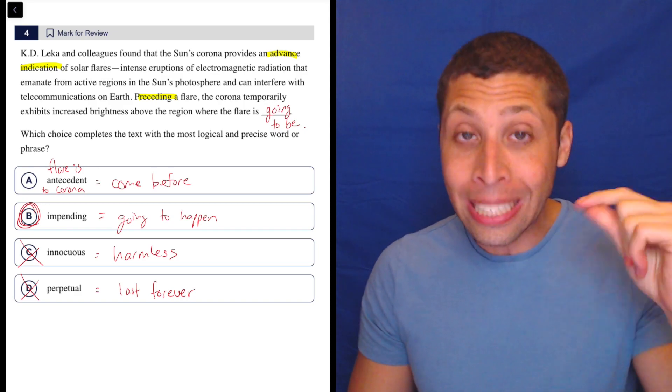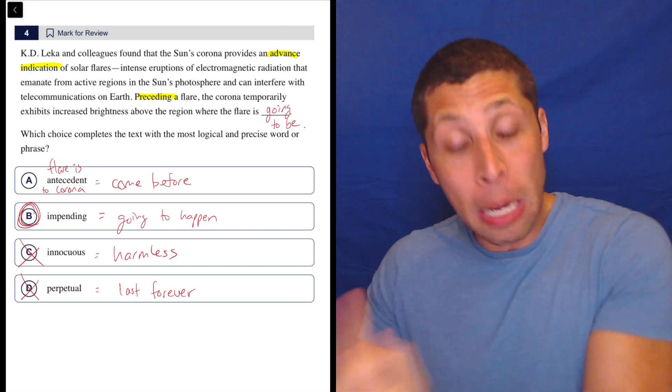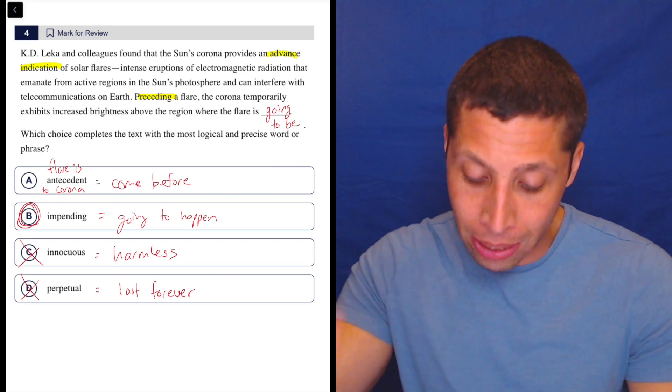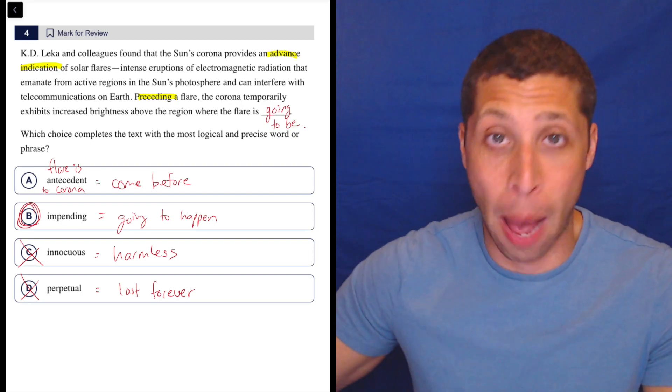Preceding the flare, meaning coming before the flare, the corona temporarily exhibits increased brightness above the region where the flare is going to happen next.